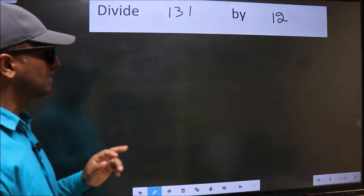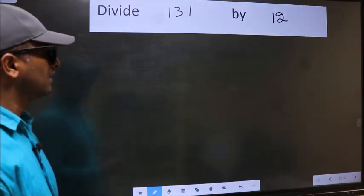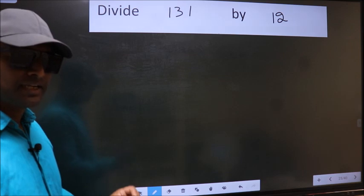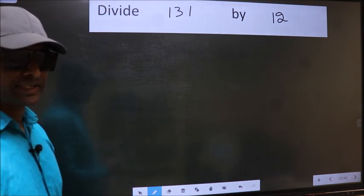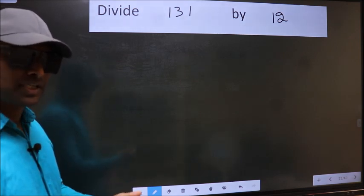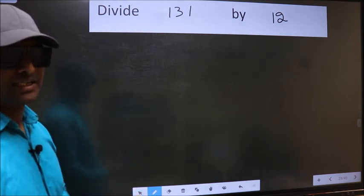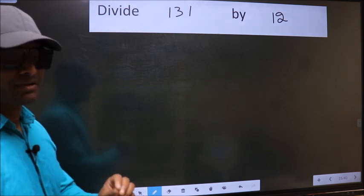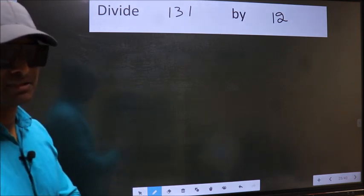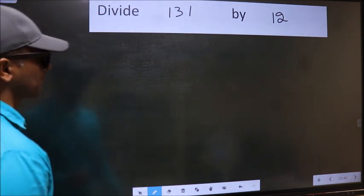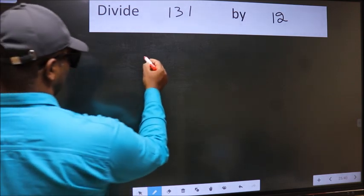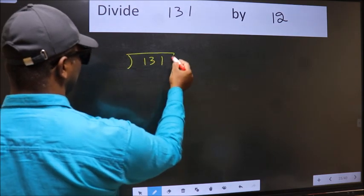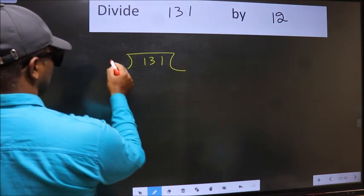Divide 131 by 12. While doing this division, many make a mistake. I will let you know what that mistake is, but before that we should frame it in this way: 131 divided by 12.